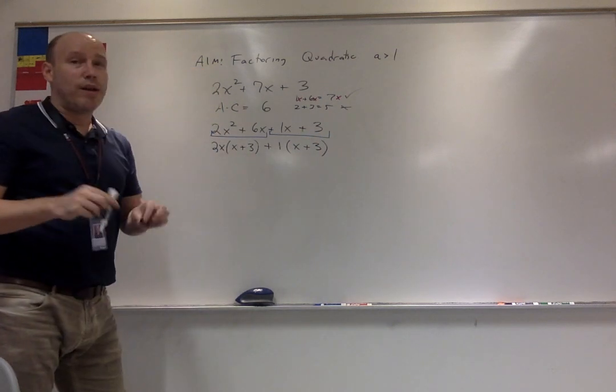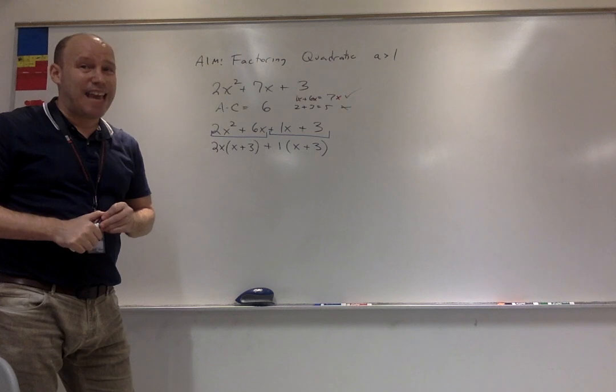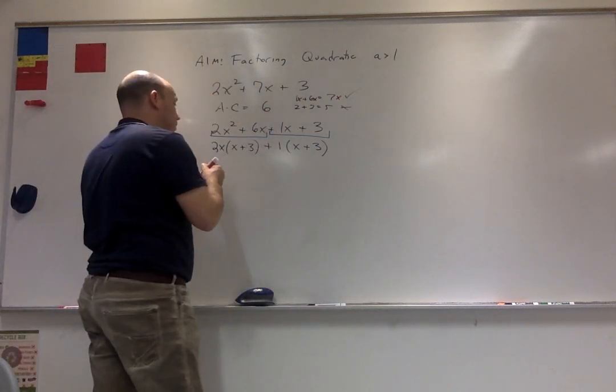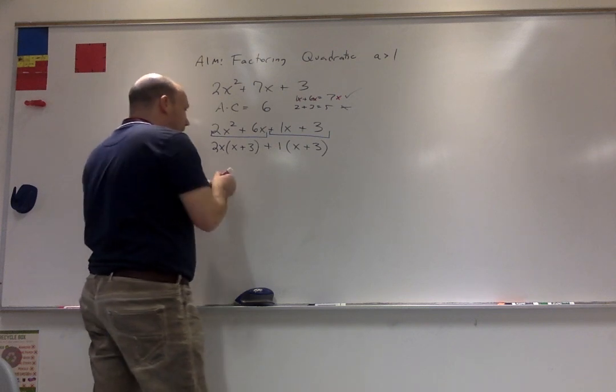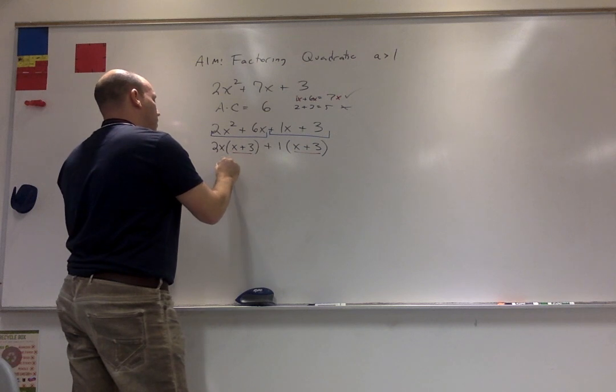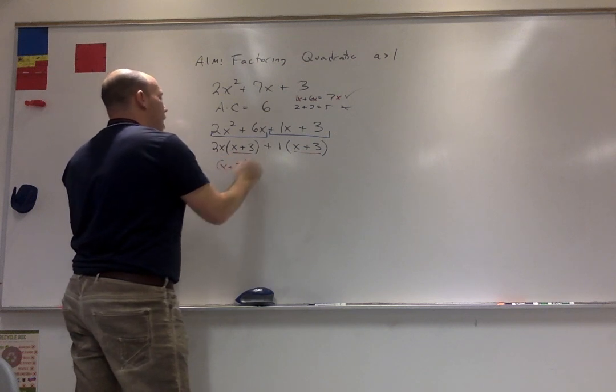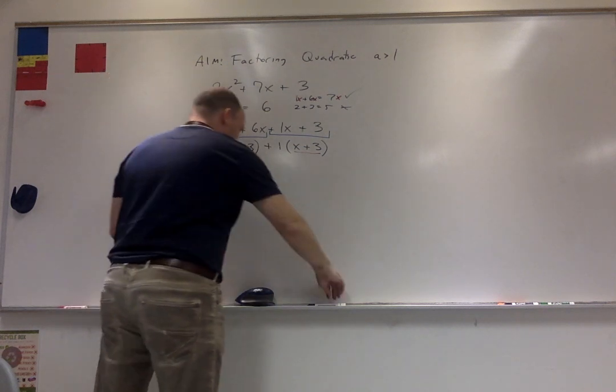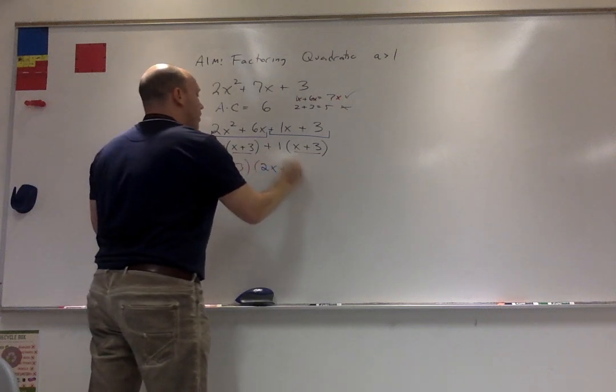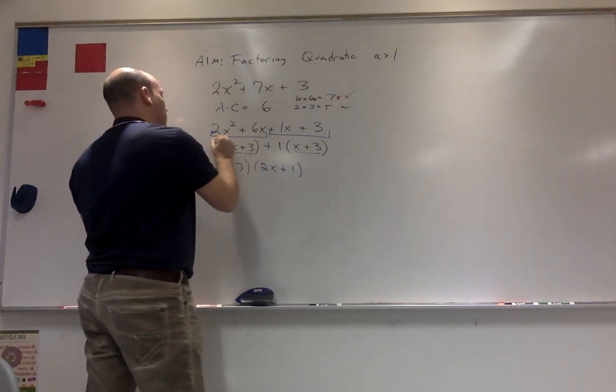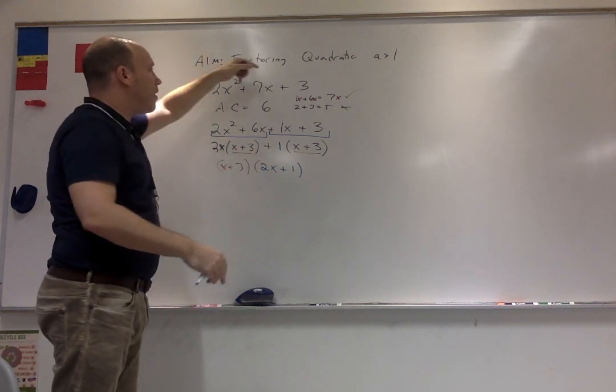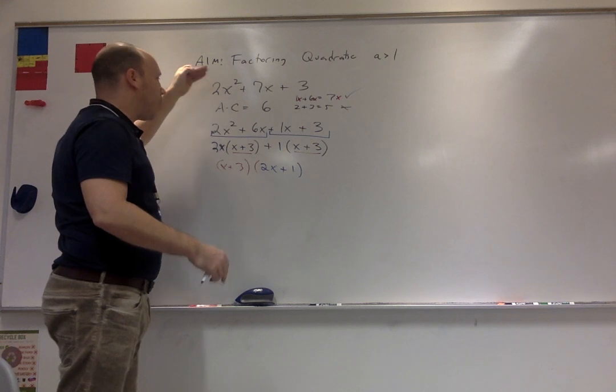What you're going to notice is that you're going to have the same factor in both terms. You're going to factor that out. So I'm going to take out the x plus 3, and that leaves me with 2x plus 1. And that's how you factor quadratics where the a term is greater than 1.